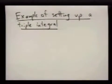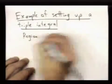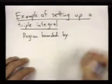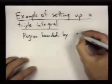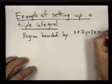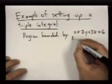So let's do a triple integral over the region bounded by four different planes. I'll take the plane defined by this equation, x plus 2y plus 3z equals 6, and the three coordinate planes.